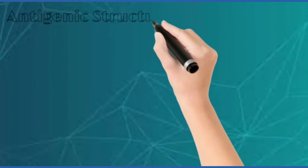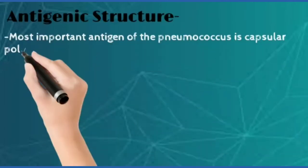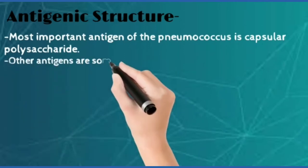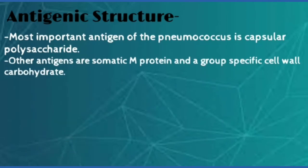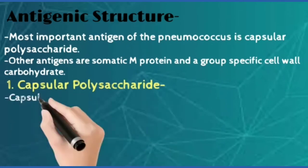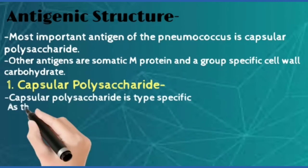Now antigenic structure. The most important antigen of pneumococci is capsular polysaccharide. Other antigens include somatic M protein and a group of specific cell wall carbohydrates.